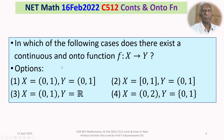We have to discuss in which of the following cases there can be more than one answer. It is from section C. Does there exist a continuous and onto function f from X to Y? X and Y are given in options 1 to 4.